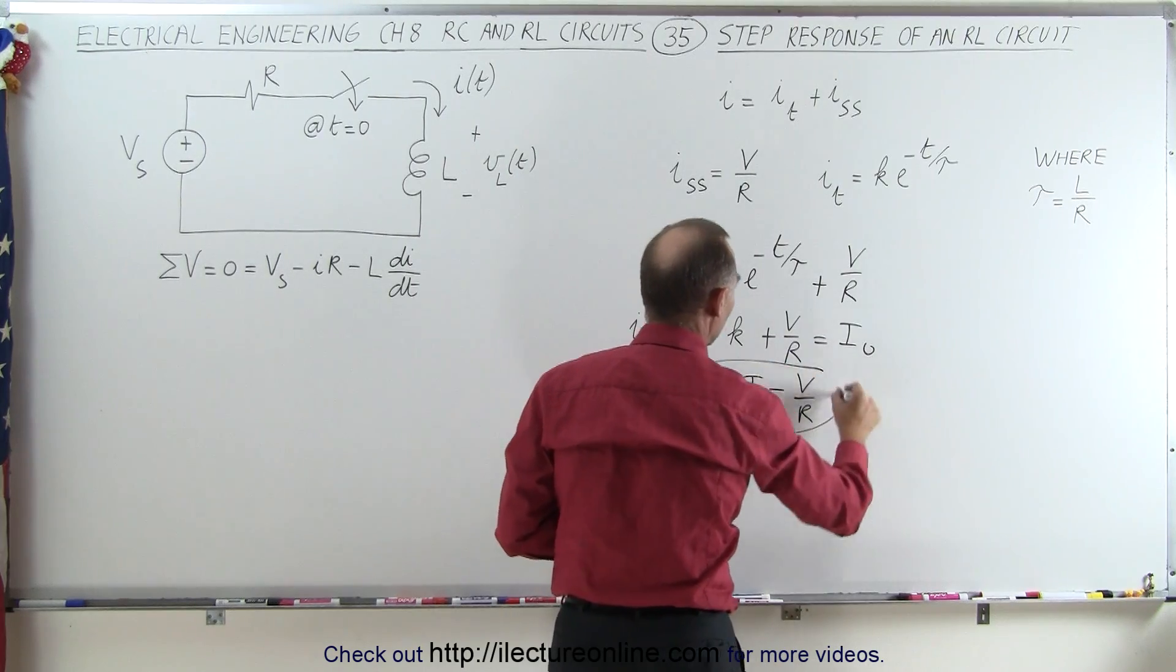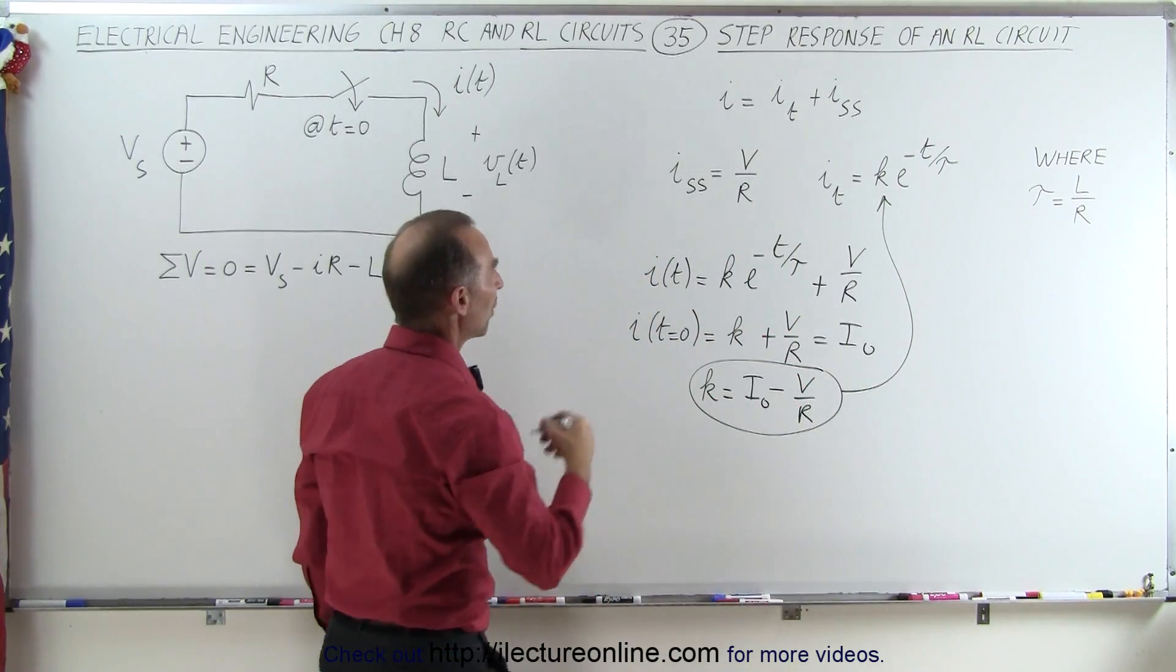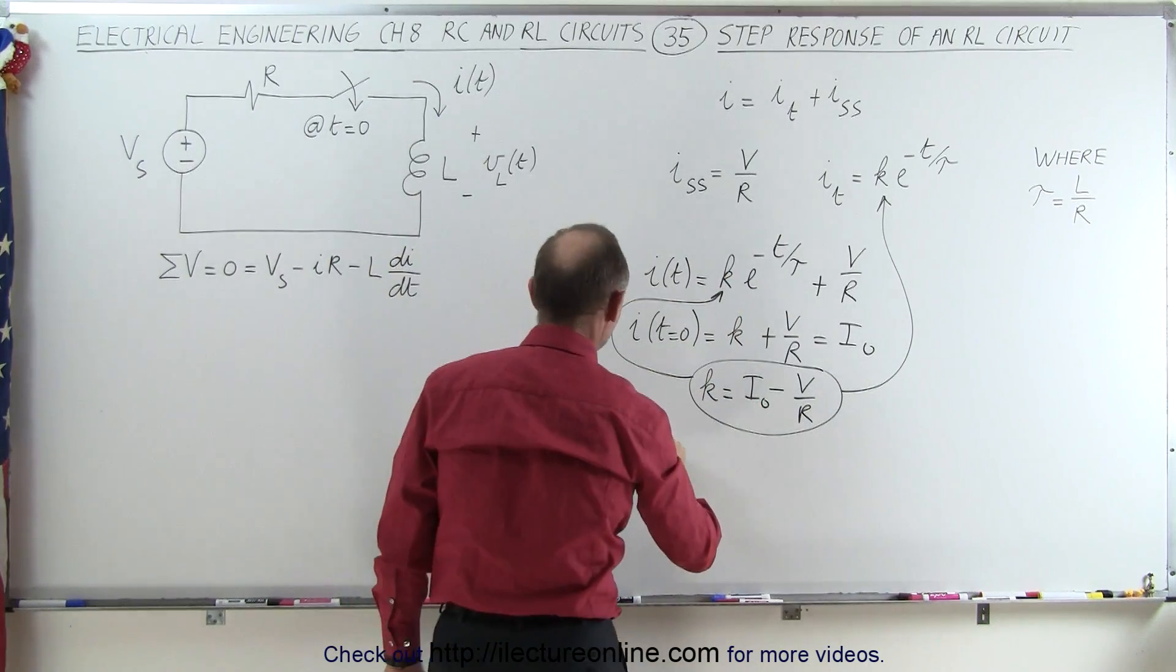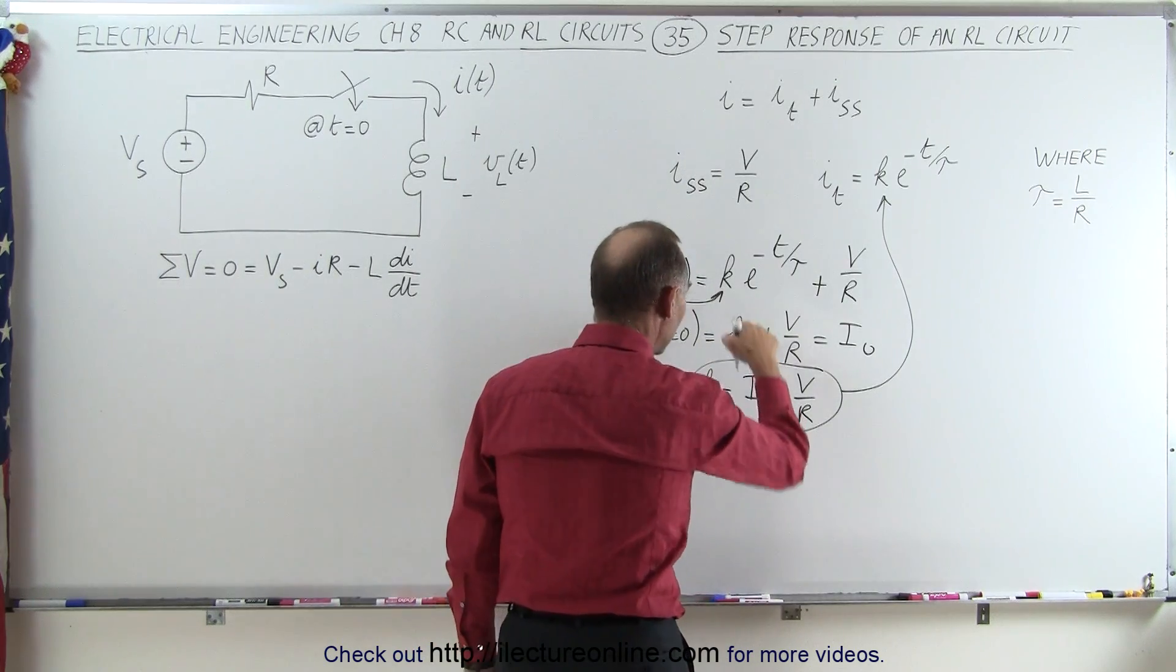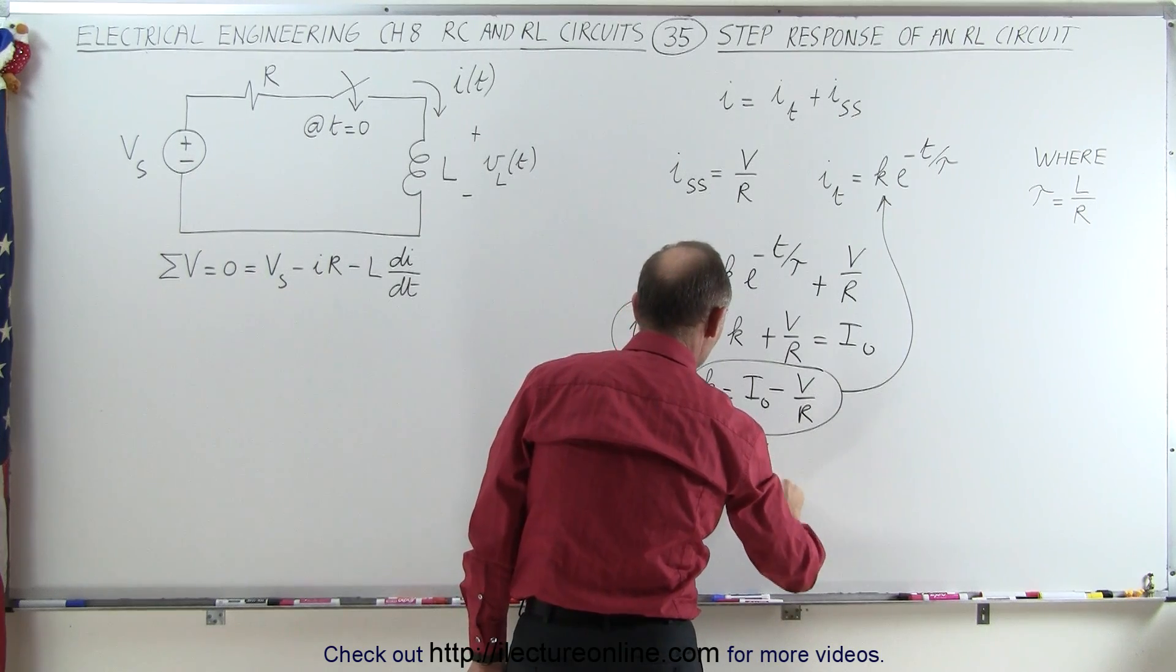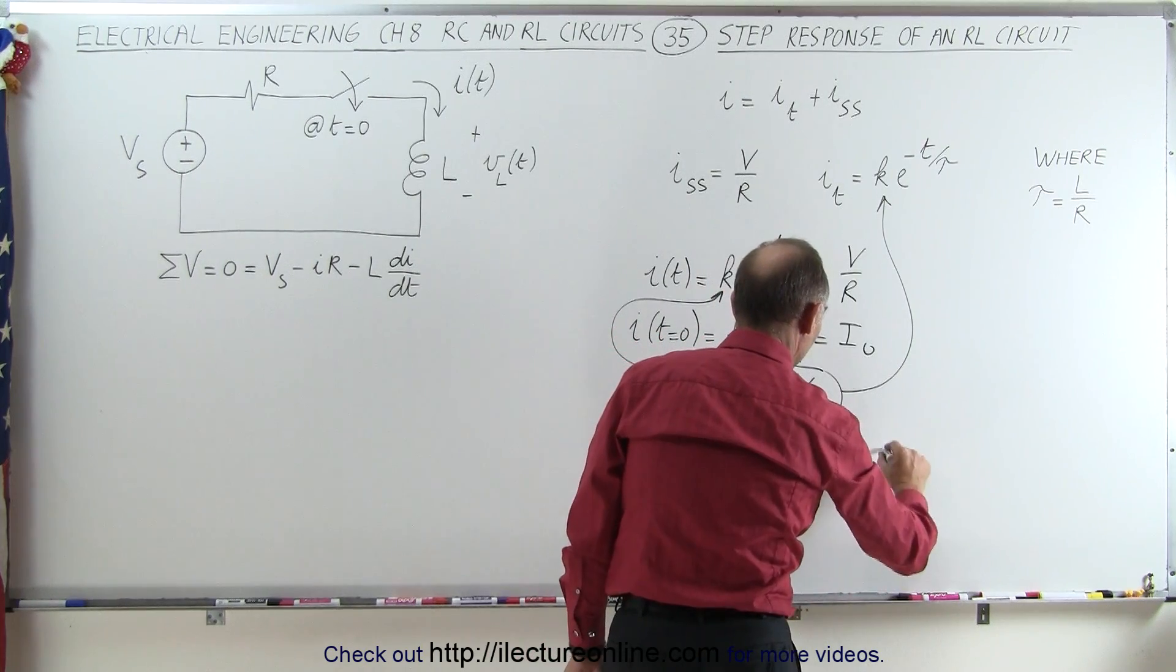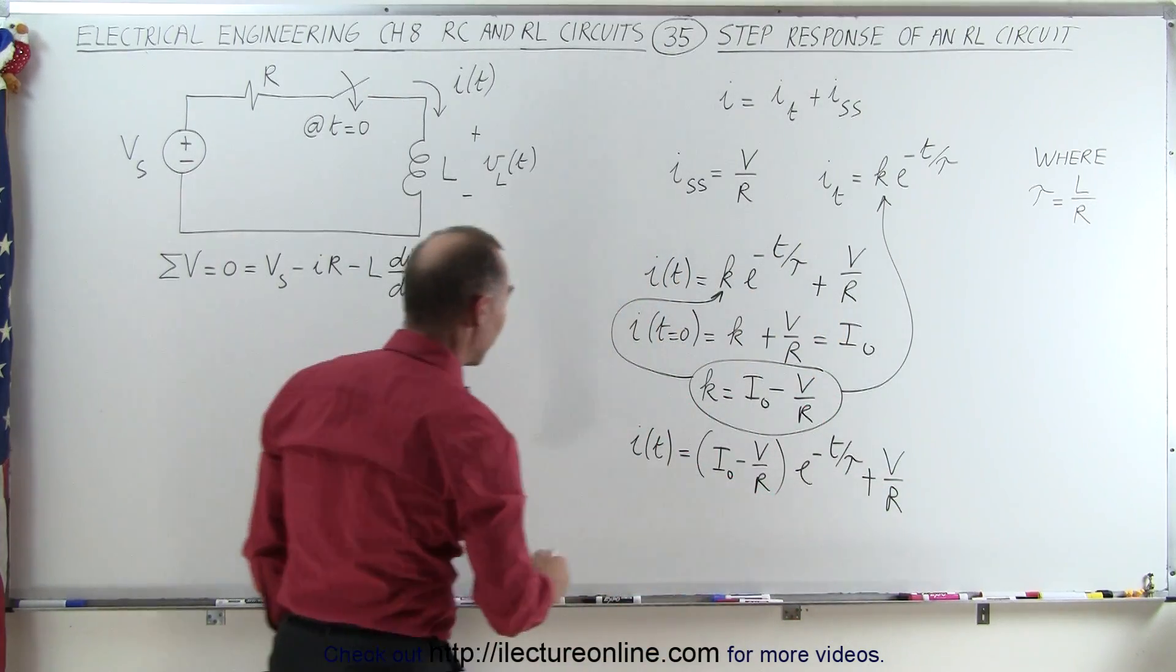So this is going to be replacing K in that particular equation. When we do that, we can write that the current, as a function of time, is going to be equal to K, which is now defined as the function I naught minus V over R, times e to the minus t over tau, and then we add to that V over R. And typically, this term is written first, so let's go ahead and do that.